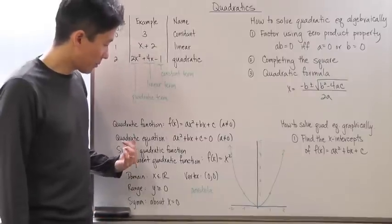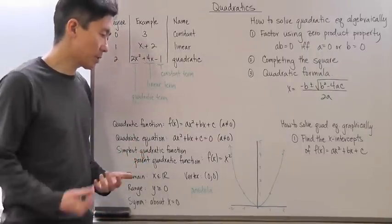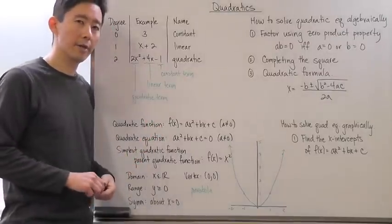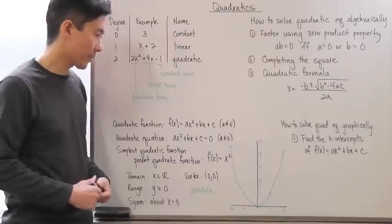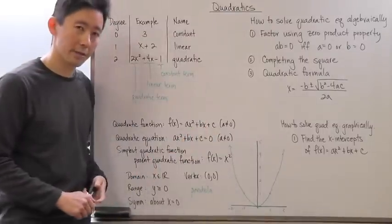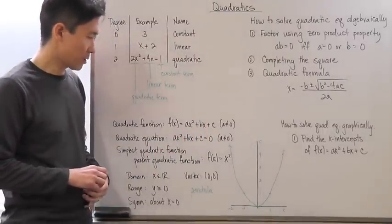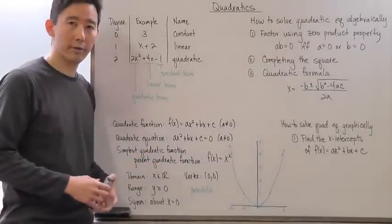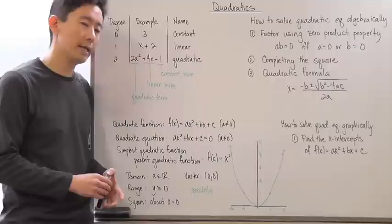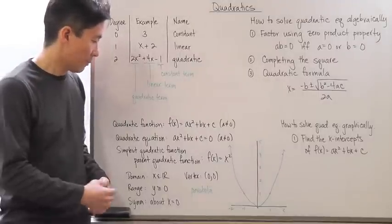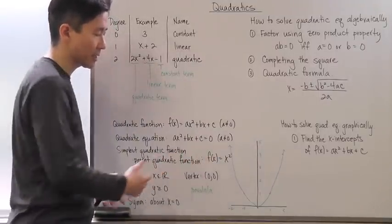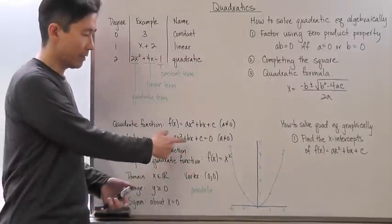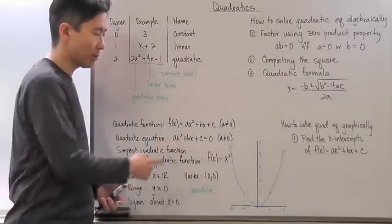We can also talk about the quadratic equation. The quadratic equation is very similar to the quadratic function in the sense that f(x) is actually equal to 0, and again a cannot be equal to 0. The simplest quadratic function — what we're going to call the parent quadratic function, which we'll discuss more in subsequent chapters — is just f(x) equals x squared, where the value of a equals 1, with no linear term and no constant term.